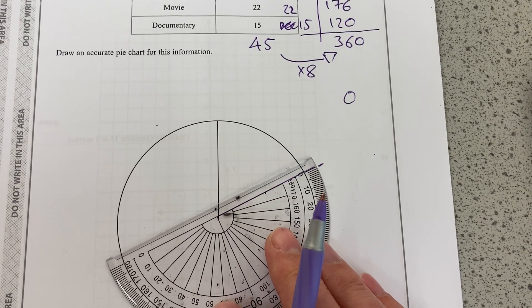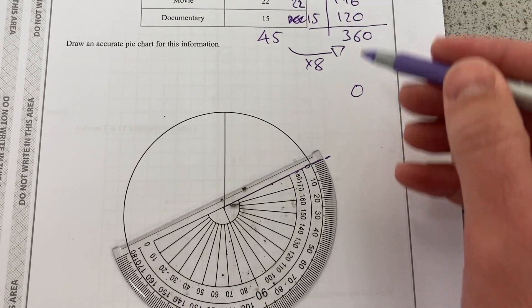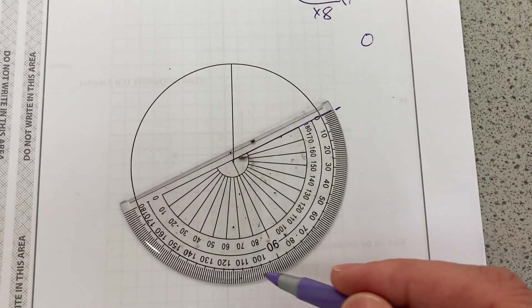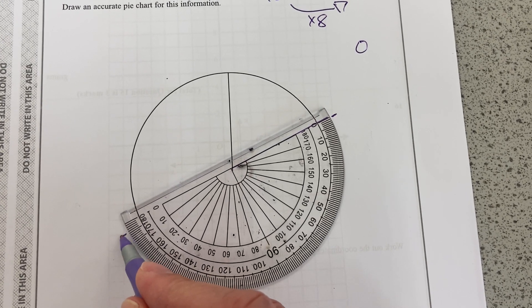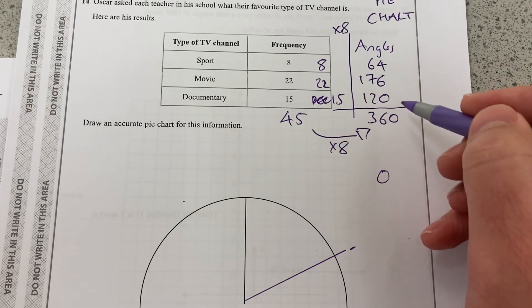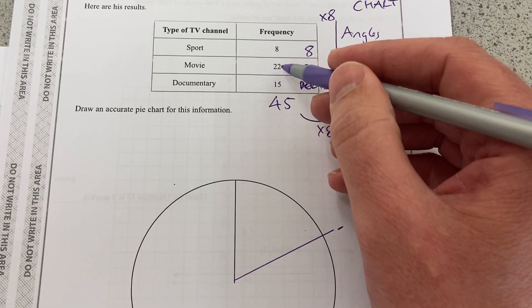So in this case, it's the outside all the way to 176. Zero all the way around to 176. And that should make sense. It's close to 180 because 22 is nearly half 45.